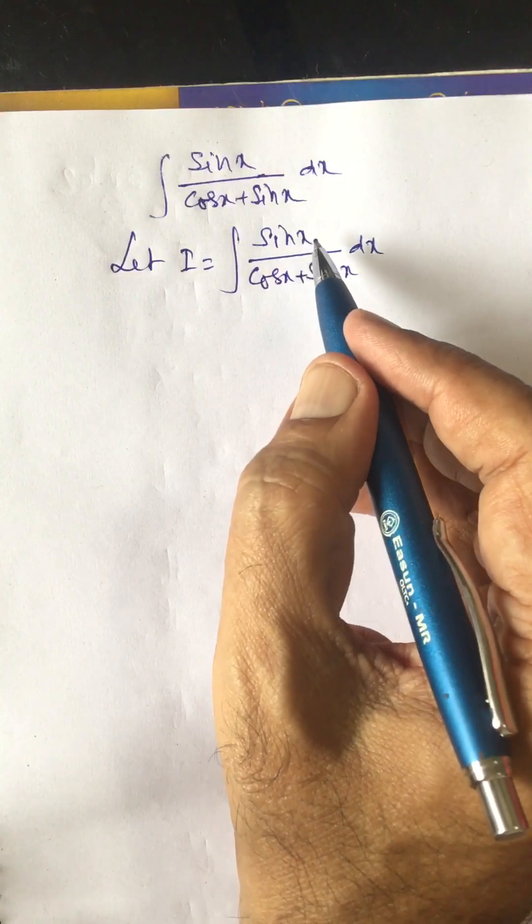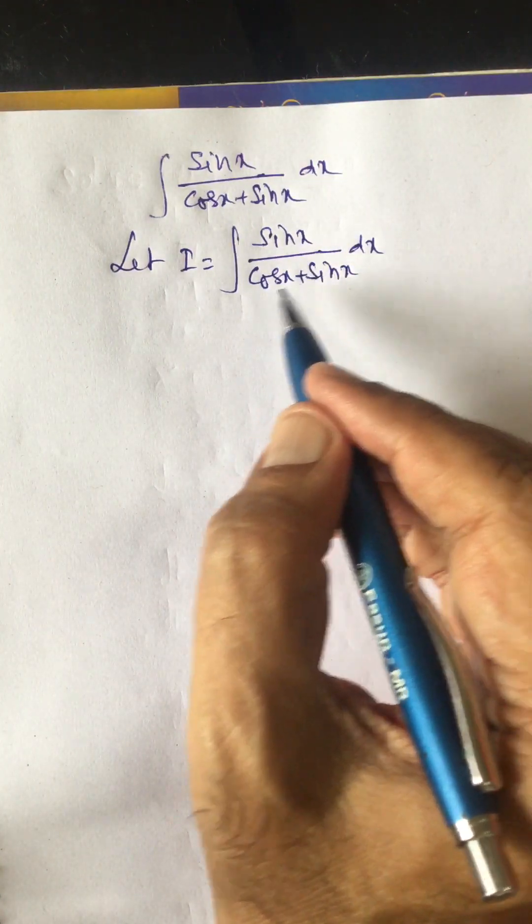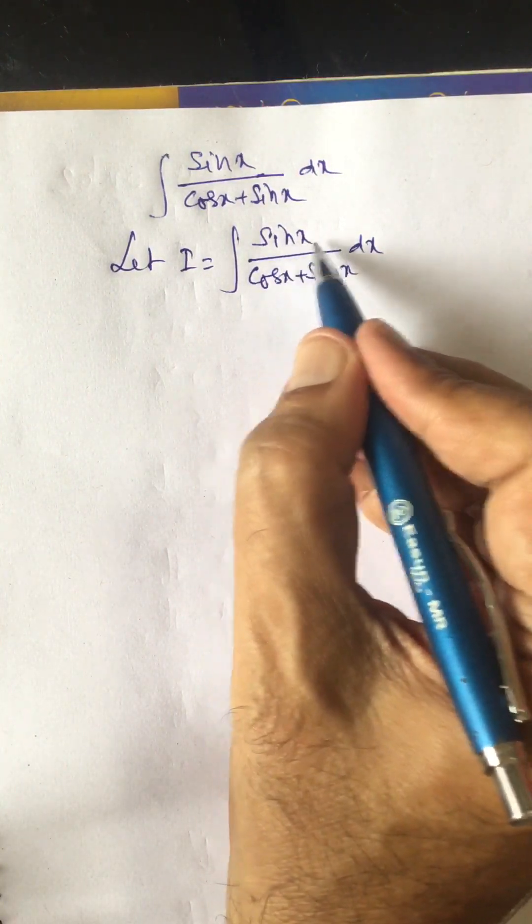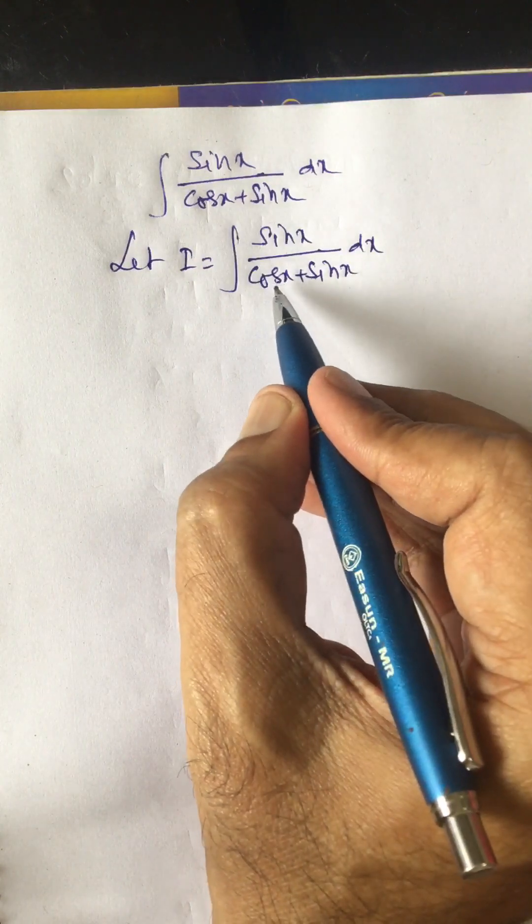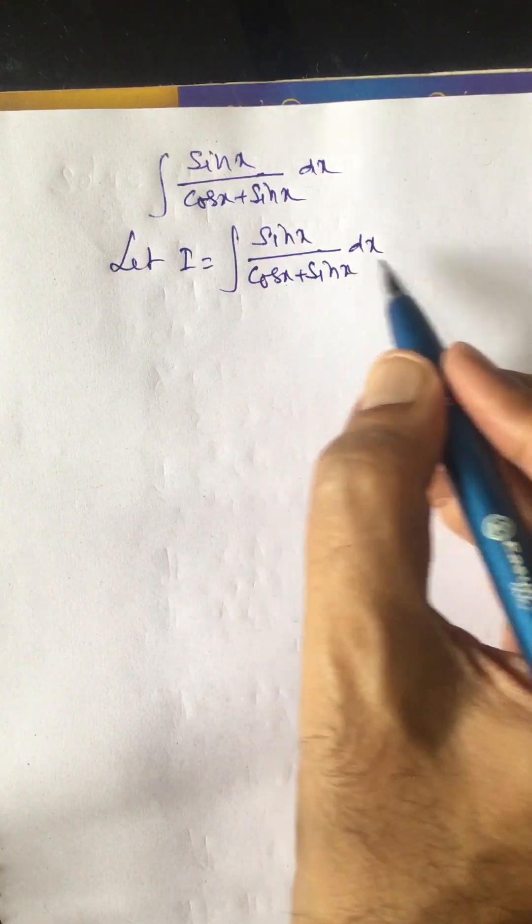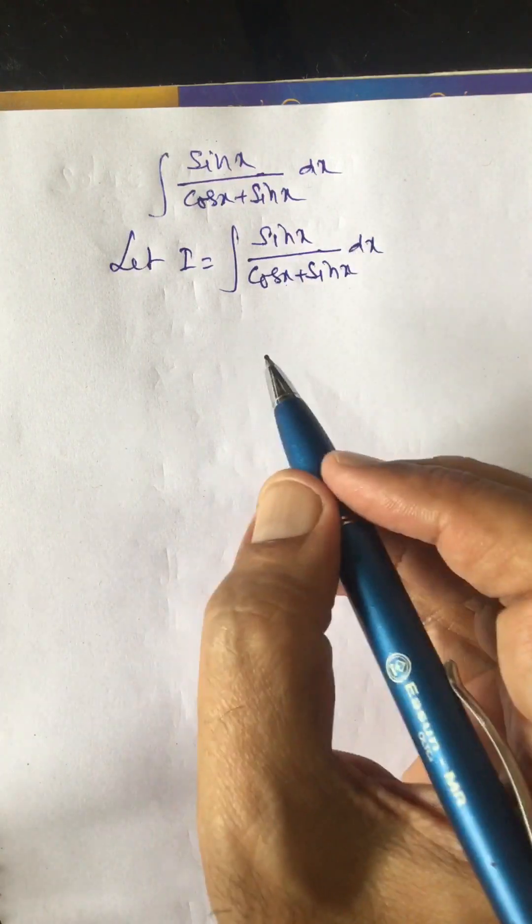Here we have numerator in terms of sin x and denominator is in terms of cos x plus sin x. So we will split this numerator such that it contains the term cos x plus sin x plus its derivative, that is minus sin x plus cos x.